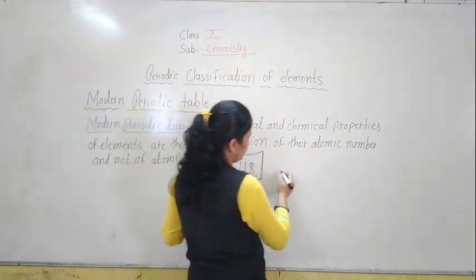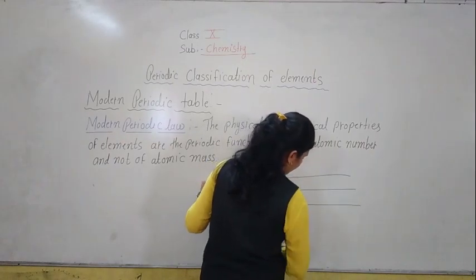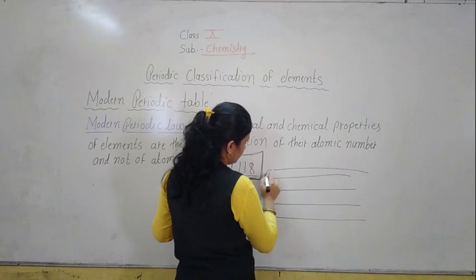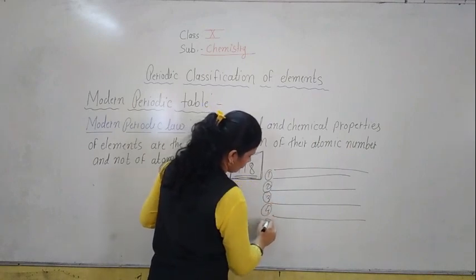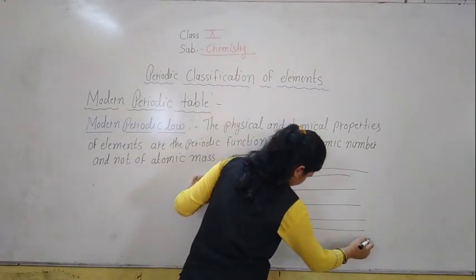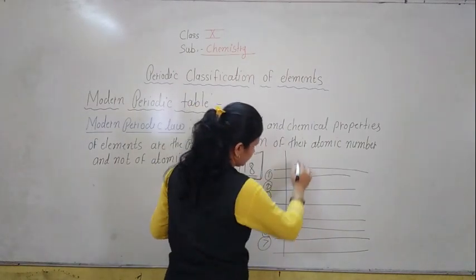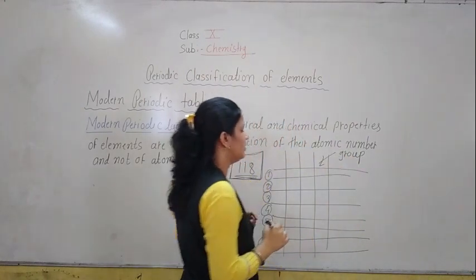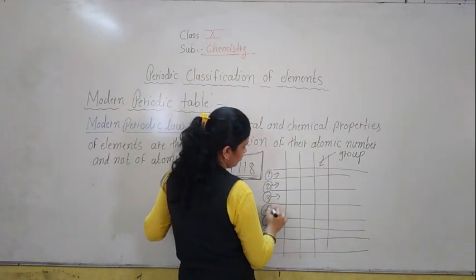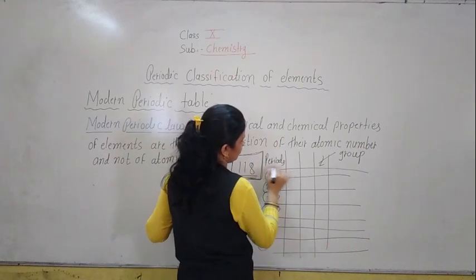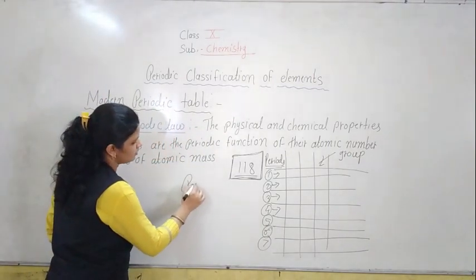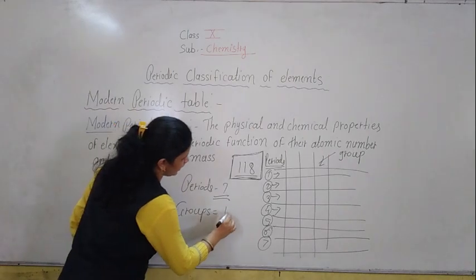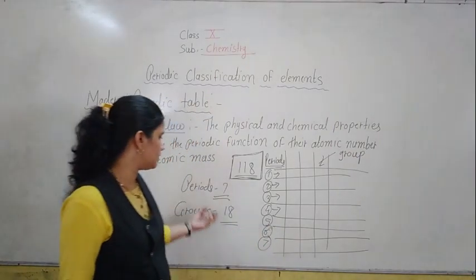Now, in the Modern Periodic Table, the horizontal lines are known as periods. In the Modern Periodic Table, there are a total of 7 periods. The vertical columns are known as groups. So in the Modern Periodic Table, how many periods? 7 periods. And groups? 18 groups. In the Modern Periodic Table, 18 groups and 7 periods are there.